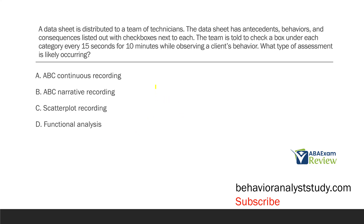A data sheet is distributed to a team of technicians. The data sheet has antecedents, behaviors, and consequences listed out with checkboxes next to each. The team is told to check a box under each category every 15 seconds for 10 minutes while observing a client's behavior. What type of assessment is likely occurring? When we think of assessments, think of preference, indirect, direct, and functional analyses. Under direct, think of descriptive assessments — those are typically the four assessments to start with.